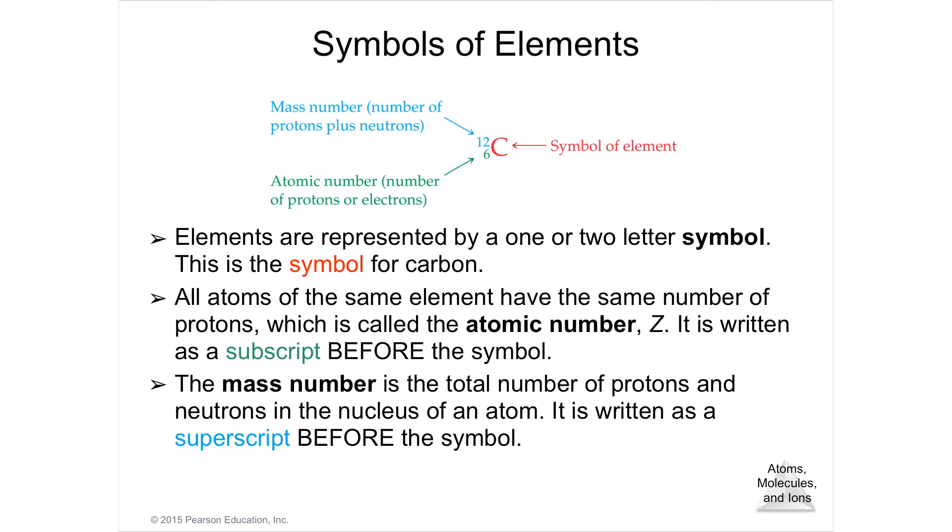When you do the symbols, you put the element symbol. And then to the lower left, you write the Z, which is your atomic number. And that's the number of protons. In a neutral atom, it's also the number of electrons because the charges will always balance. So whatever the protons are, there will be equal number of electrons. And then the upper left in the superscript will be the mass number. And the mass number, remember, is the number of protons plus neutrons together.